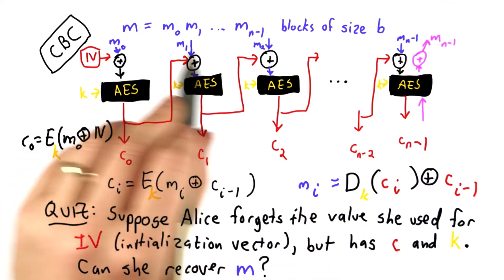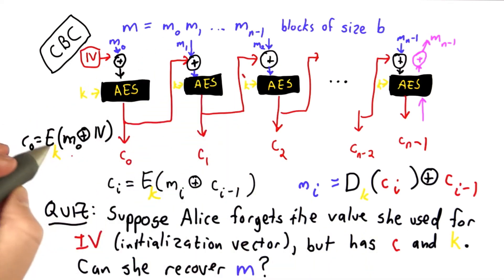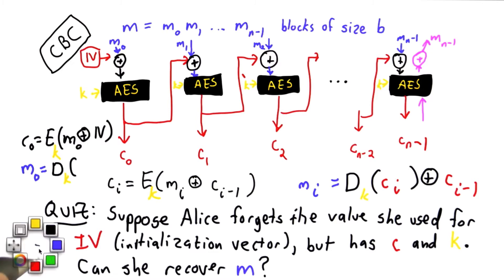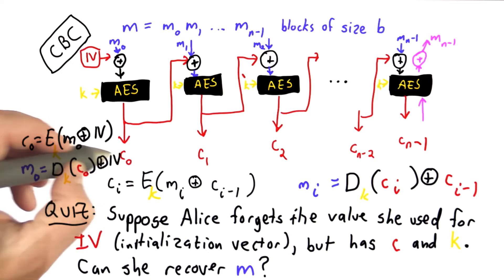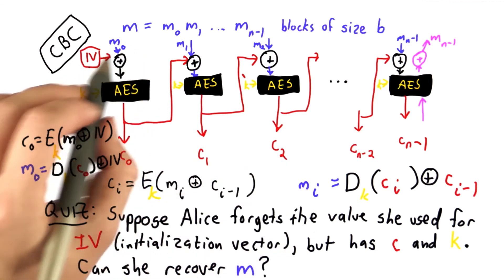except for we have this exception for the last one. The encryption for the last one used this IV to get the last message block. Well, what we need to do is decrypt the last ciphertext block, or the first ciphertext block. We're going backwards now. And then XOR that result with the IV. So if we lose the IV, but don't lose the key, and don't lose the ciphertext, we've lost just the first block.